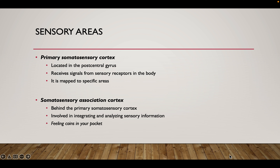We now have somatosensory association areas, or association cortex. Whenever we talk about the primary cortex — we'll see it with auditory, we'll see it with visual — the primary cortex is where we're receiving an initial stimulus. The association area is where we begin to associate it and interpret it, and we can also relate it to other things, like past memories. Our somatosensory association area is going to be just behind the primary somatosensory cortex, which is part of that post-central gyrus. That's where we're going to integrate and analyze things we've received as sensory stimuli, and we may also begin to relate them to some past experience or past memory.